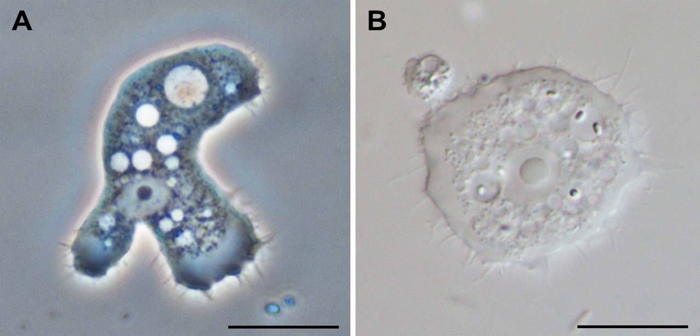Discosia is a class of Amoebozoa, consisting of naked amoebae with a flattened, discoid body shape. Members of the group do not produce tubular or subcylindrical pseudopodia, like amoebae of the class Tubulinia.